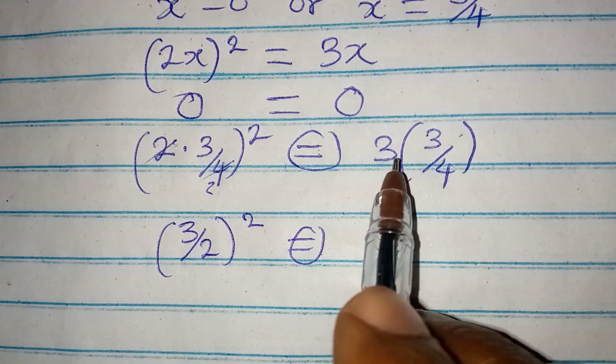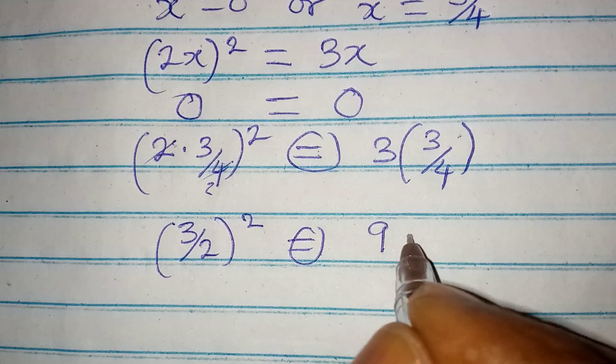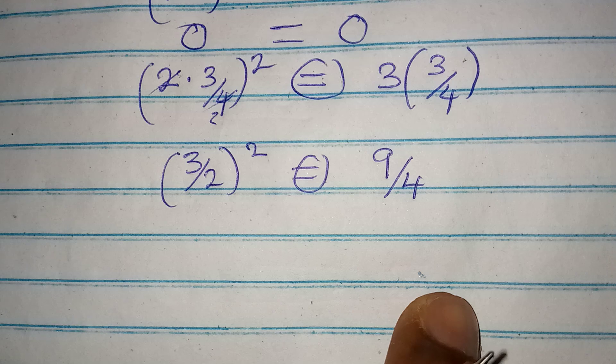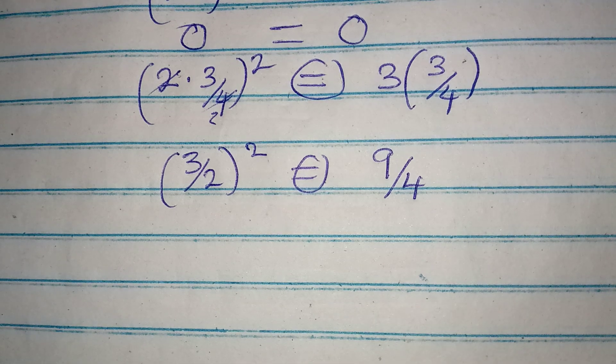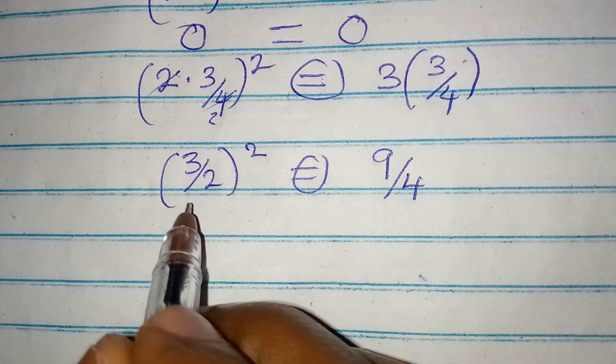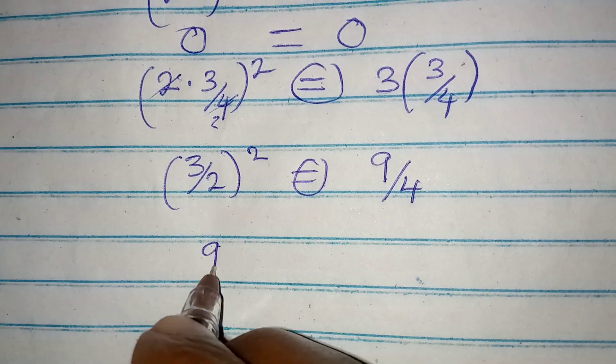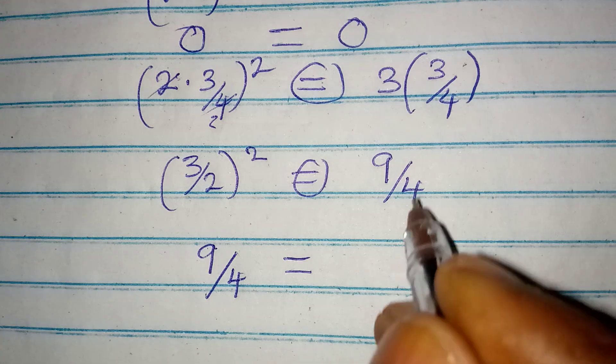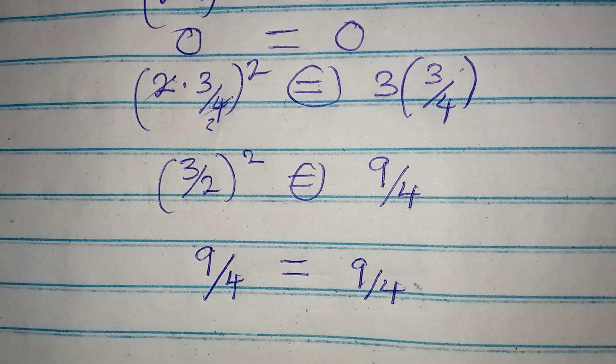I think by now we can see that they are the same thing on both sides, right? Because 3 squared will give 9 and 2 squared will give 4, and this is equal to 9 over 4 on the right hand side.